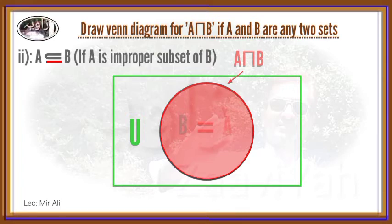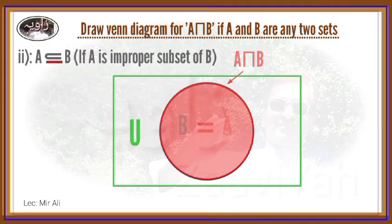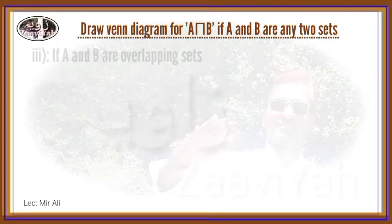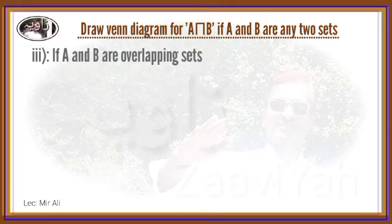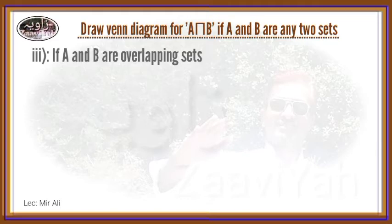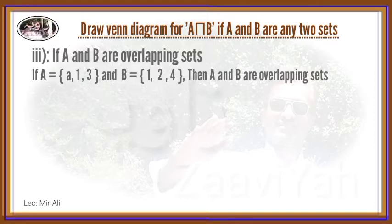When set A is an improper subset of B, the situation is that set A and set B are overlapping sets — at least one common element must exist. For example, A and B are overlapping sets, so at least one common element is required.